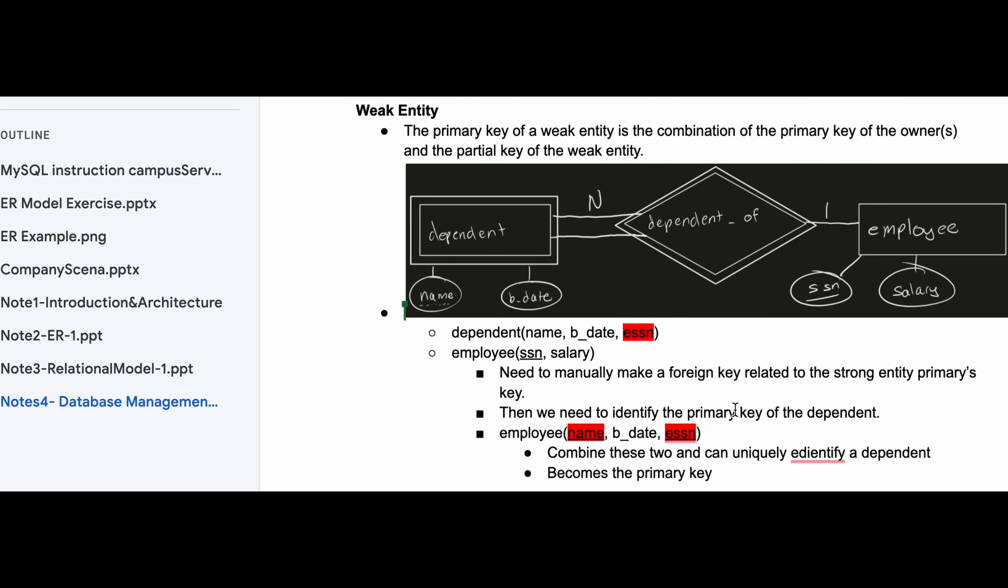Now we need to identify the primary key of the dependent. The primary key of the dependent is going to be the employee name. So when we write this out we are going to have employee name. This is the primary key and we also know that this foreign key has to be underlined too for this to be a primary key because it's related to the strong entity's primary key as ESSN. So both of these are underlined and after combining these two we can uniquely identify a dependent and it becomes a primary key.